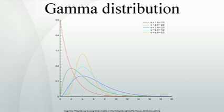Applications. The gamma distribution has been used to model the size of insurance claims and rainfalls. This means that aggregate insurance claims and the amount of rainfall accumulated in a reservoir are modeled by a gamma process. The gamma distribution is also used to model errors in multi-level Poisson regression models, because the combination of the Poisson distribution and a gamma distribution is a negative binomial distribution. In neuroscience, the gamma distribution is often used to describe the distribution of inter-spike intervals. Although in practice the gamma distribution often provides a good fit, there is no underlying biophysical motivation for using it.